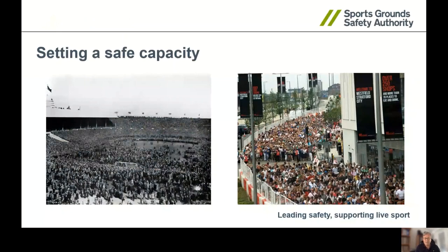Setting a safe capacity is nothing new. We consider setting a safe capacity to be the first and probably the most important aspect of delivering a safe, secure and enjoyable event. The photo on the left of the screen is the 1923 FA Cup final when Wembley expected 125,000 spectators and it was estimated 300,000 turned up, and the pitch had to be cleared by a police horse before the game started. The photo on the right is the London Olympics 2012 showing a well-managed crowd, indicating that if a capacity is set correctly it will lead to a safe, secure and enjoyable event for all.